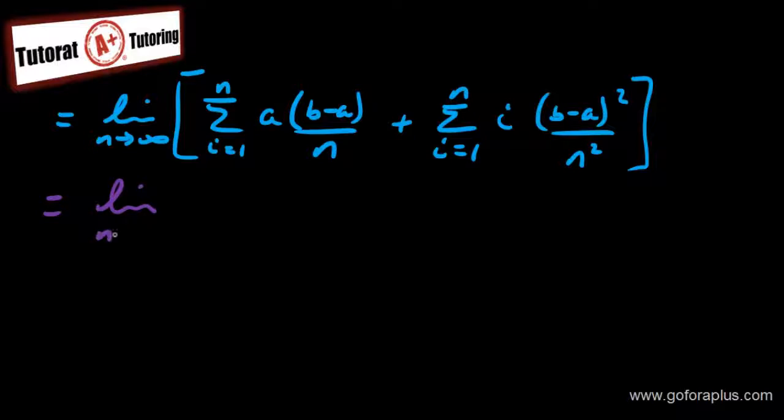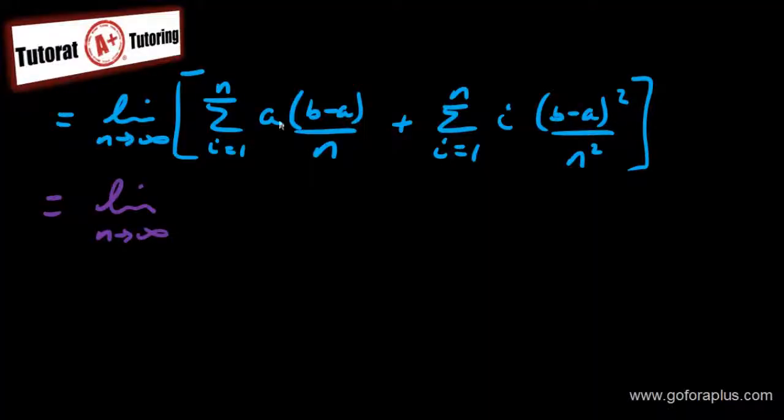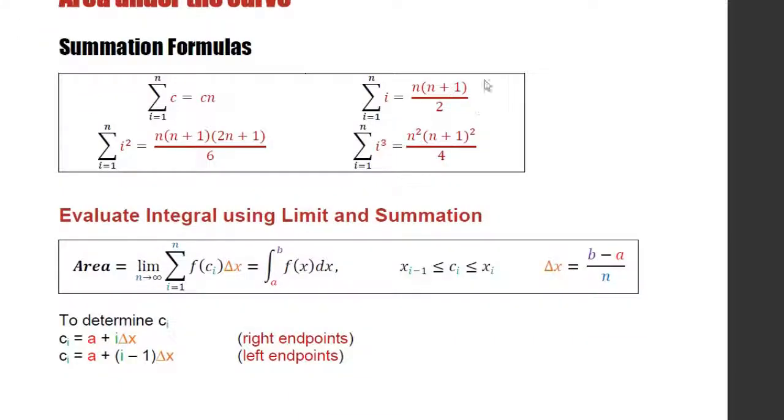I have limit n approaching to infinity. The first term is all constant. If it's all constant, what is the equation for that? It's c times n. So this constant times n. So I have this whole thing times n, which cancels out with this n. a times b minus a over n times n, right? So this is my first term. And then my second term, I have an i here. Summation of i, this whole thing is constant. Constant times summation of i, which is this equation, n times n plus 1 over 2.